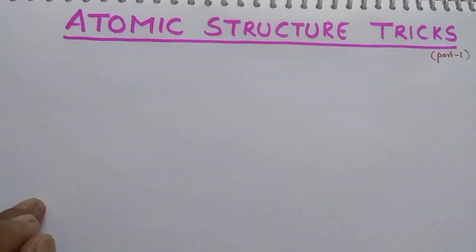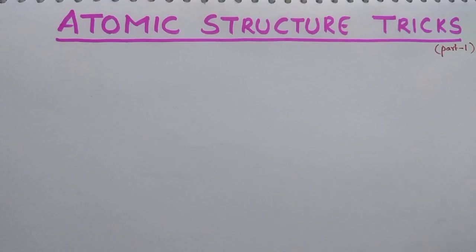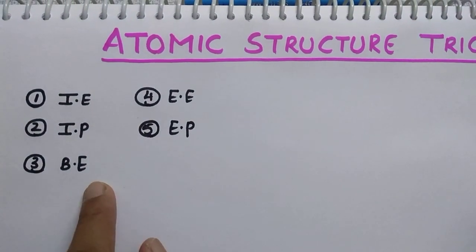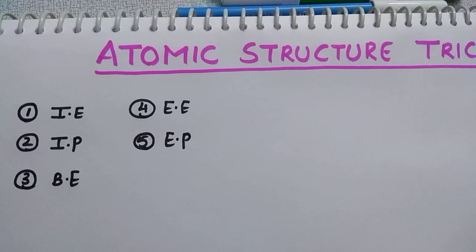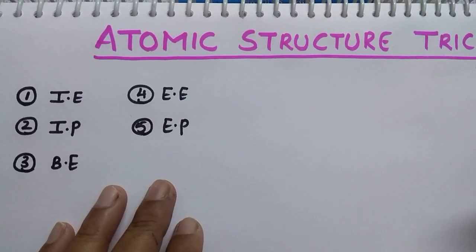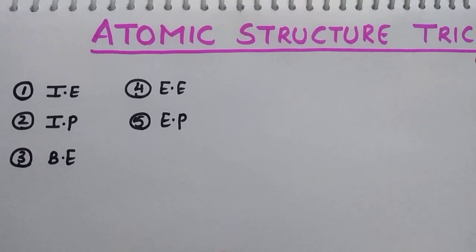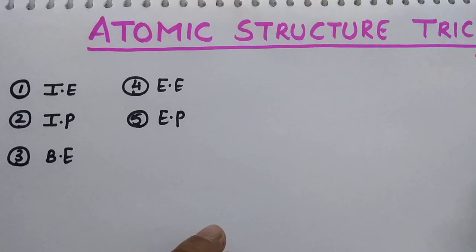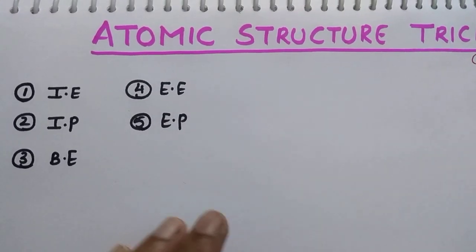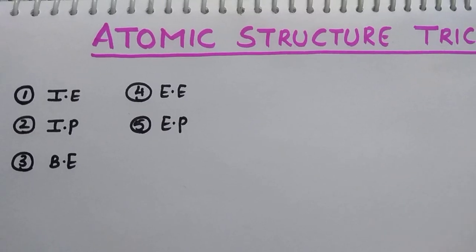Hi students. In this session I am going to discuss some important tricks to solve atomic structure questions easily. In this video I am mainly focusing about ionization energy, ionization potential, binding energy, excitation energy and excitation potential. These are very easy topics but students feel they are tough concepts and never attempt these questions, or they commit little mistakes while solving numericals and lose marks. I am going to teach these concepts very easily and solve the numericals so that next time you see these questions you will be perfect and get your score well. Let us start this session.